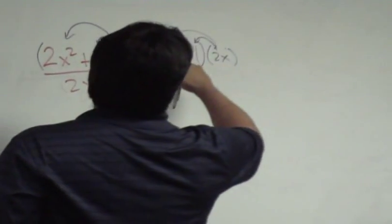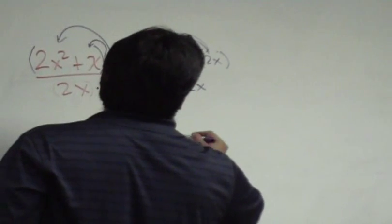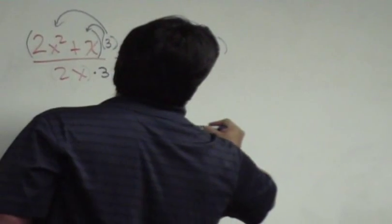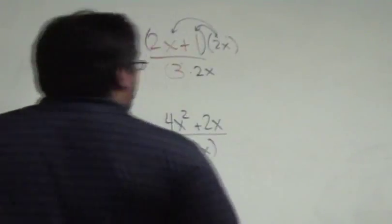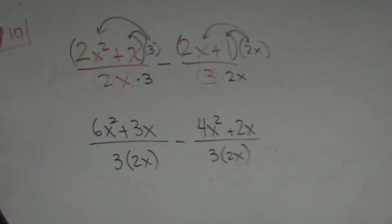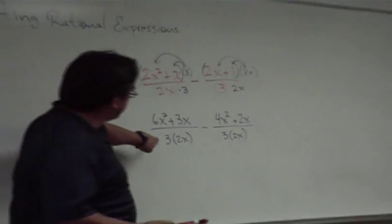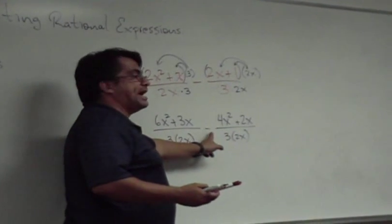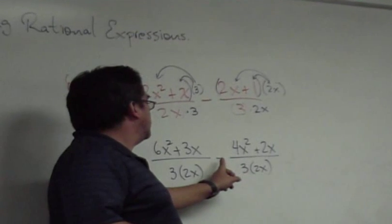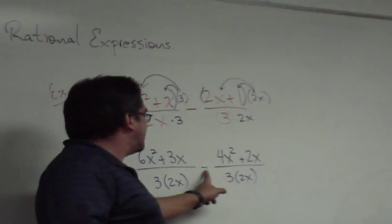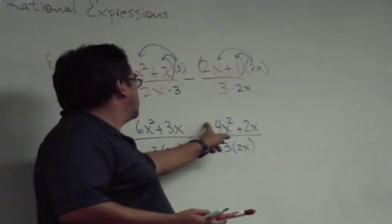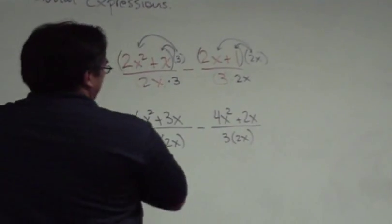Over here: 2x times 2x is 4x², and 2x times 1 is 2x. Notice where we are — we now have the same denominators and a subtraction. We know what to do next. When you have the same denominator and want to make sure you don't mess up the sign, change it to addition and then take the opposites of all the terms in the second numerator.